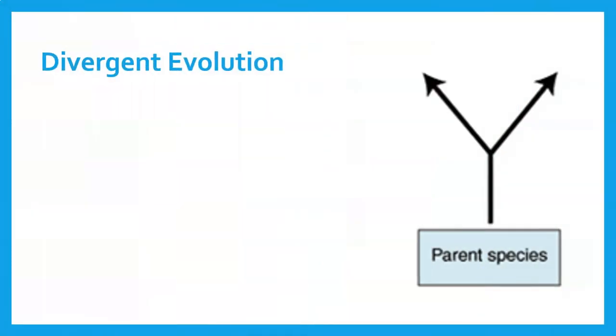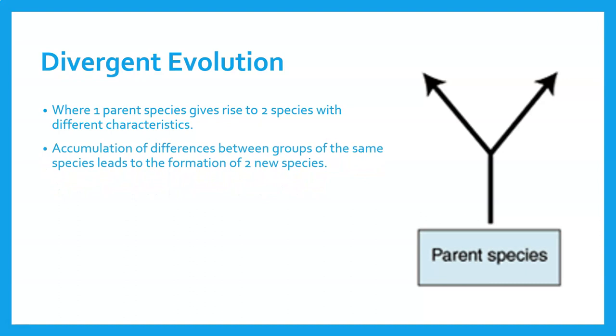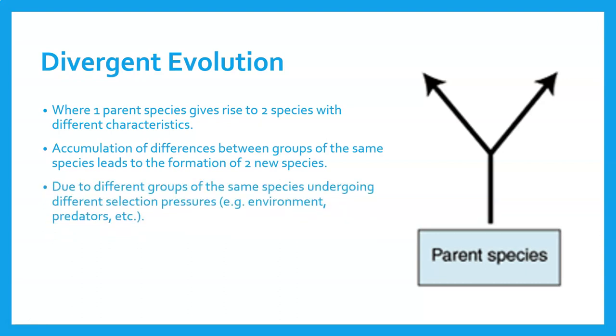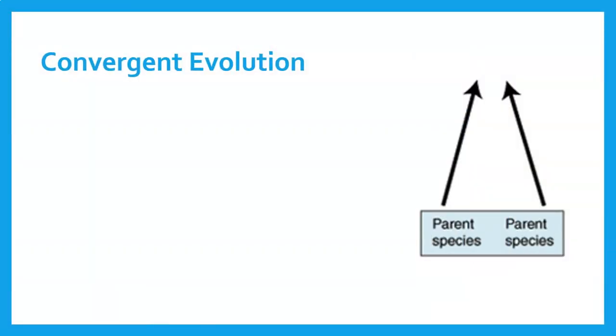When we start with divergent evolution, let's have a look at the picture here. We have a parent species and other species diverge from that. They come to a Y-junction and off they go into different species. We have one parent species that gives rise to two or more species with different characteristics. The accumulation of differences between groups of the same species lead to the formation of two new species, due to different groups undergoing different selection pressures, for example environmental or predators. Those selection pressures have made them two different species.